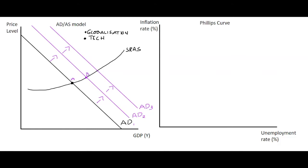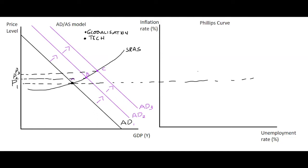Looking at it in terms of prices, we go from P1 to P2, which is somewhat higher but not that much, to P3, which again is only a small increase in price. So if we take these changes and move them over to our Phillips curve.